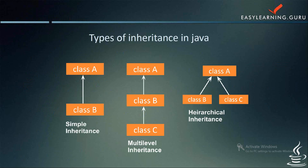In multi-level inheritance, class B is a subclass of class A and class C is a subclass of class B. Then hierarchical inheritance is when a class has more than one child class or subclass — in other words, more than one child class has the same parent class. Such kind of inheritance is called hierarchical inheritance.